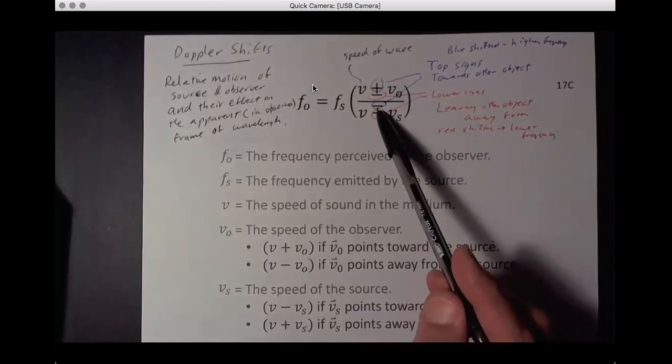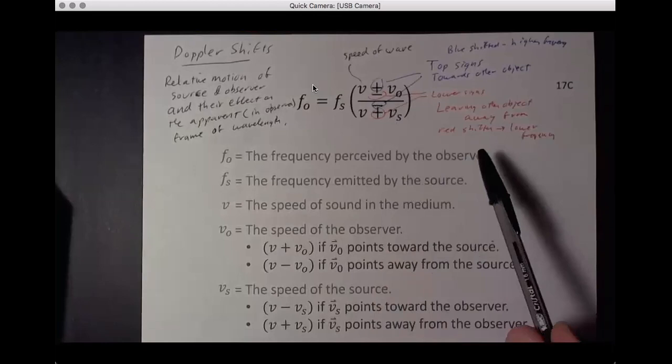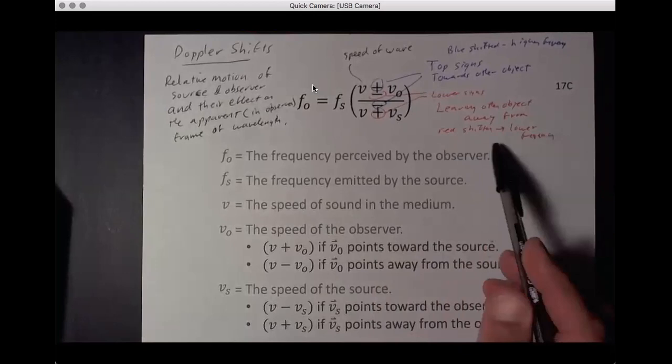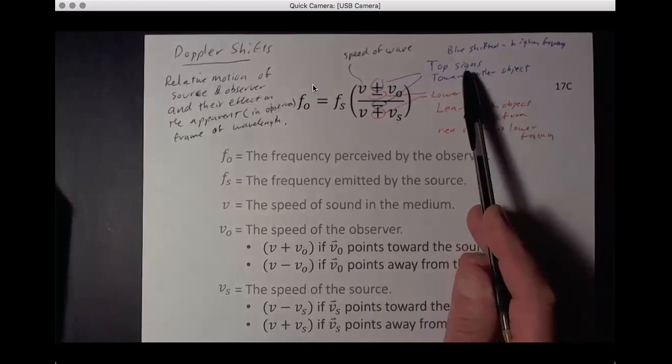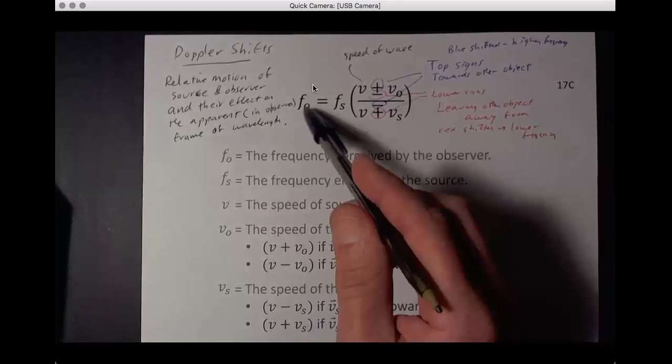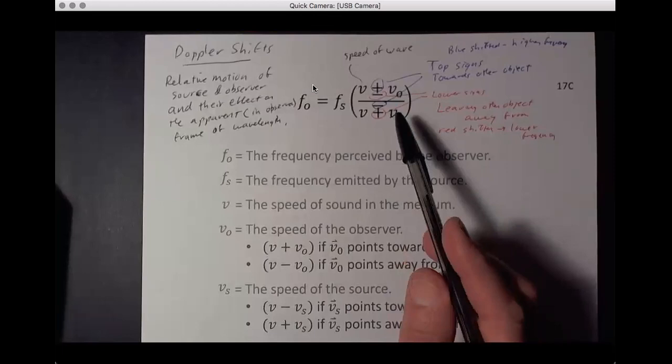Any of those cases, it'll be a lower frequency. And so the way that works out with the pluses and minuses is the top signs are towards the other object and the minus signs, the lower signs for leaving. Just remember, it's plus or minus in the top and minus plus on the bottom. The reason why it's reversed is that a big number on the bottom makes the thing smaller. A bigger number on the top makes it bigger. And that's how you get the reverse sign. So as you're leaving, you get a red shift, which is lower frequency. Red is the wavelength idea in the visible. Or a blue shift to higher frequency if they're going towards. That's what you have to remember.